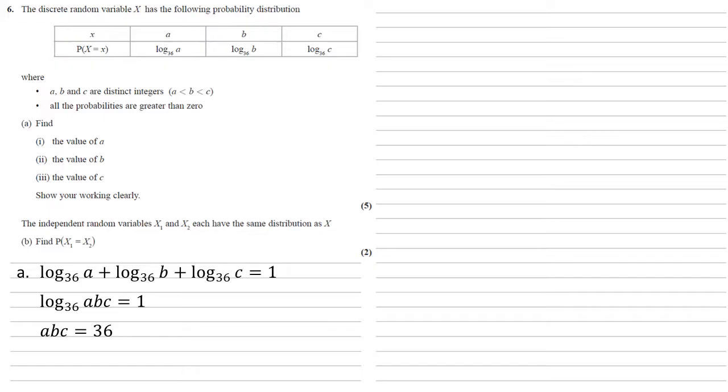We've got that our three unknowns multiplied together make 36. Now we also know that all the probabilities are greater than zero. So for example, if log base 36A is larger than zero, that means A itself must be larger than one. Because if A was one, then the probability would be zero. And if A is larger than one, B and C must also be larger than one.